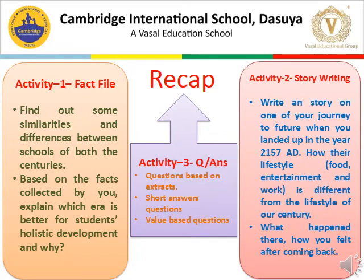Let's recap. In our last lesson, I gave you three different activities based on the chapter. My first activity was Fact File. In this, you had to jot down all the important points and qualities of the schools of the 22nd century, and then jot down the same points for your school of the present era — using your understanding skills for the chapter and your observational skills for your present school. After collecting all the facts, you had to make a comparison between both and find out which era is better for students' holistic development and why.